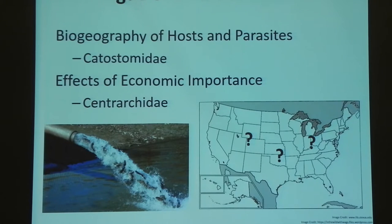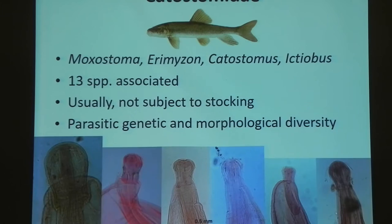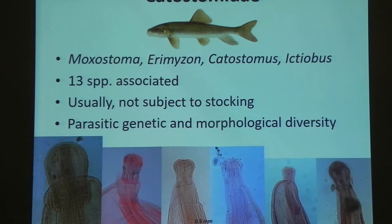The Catostomids and Centrarchids are the two families that are very interesting to me — they popped up as obvious, intriguing points. These parasites are reported from across the U.S. and a lot of them are from Catostomid hosts. Here are four genera of Catostomids that all have Neokinorhynchus species described from them. Within the 33 species described from fish in the U.S., 13 of them — so over a third — are described from Catostomid hosts. Clearly there's some kind of a special relationship between this fish family and its parasites; somehow they've diverged a lot more within Catostomid hosts than other host families.